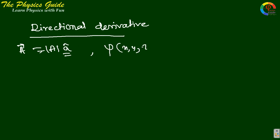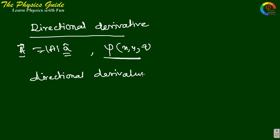So if there is a function psi(x, y, z), we have to measure the directional derivative of psi along the direction of A. That equals grad psi dot the unit vector of A. This is called the directional derivative — it is the component of the gradient of psi along the direction of vector A.